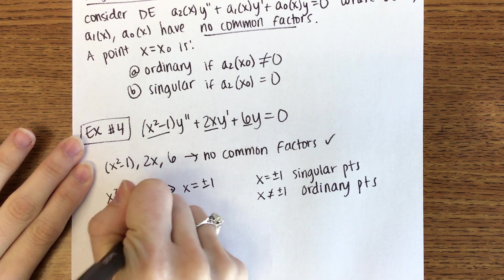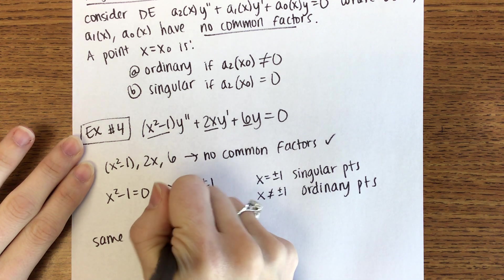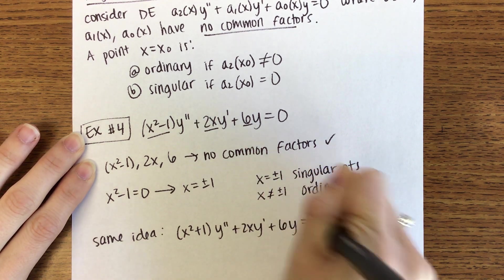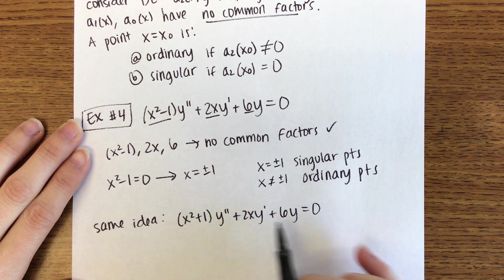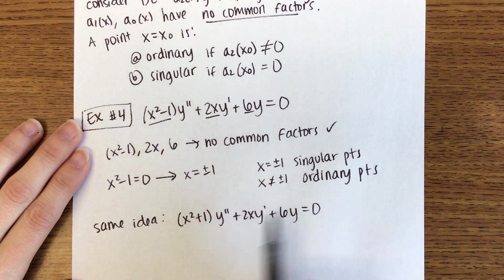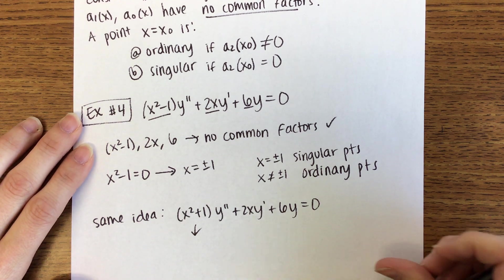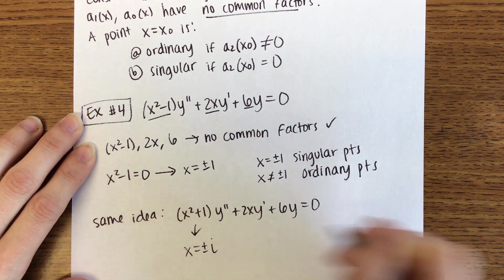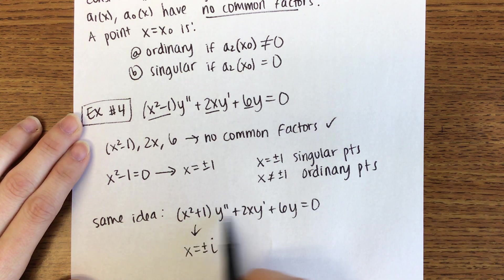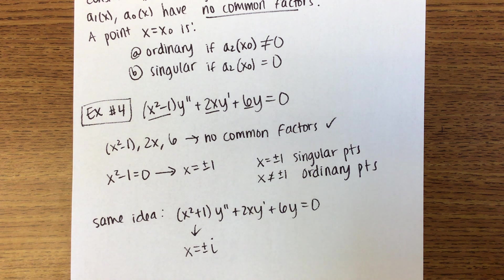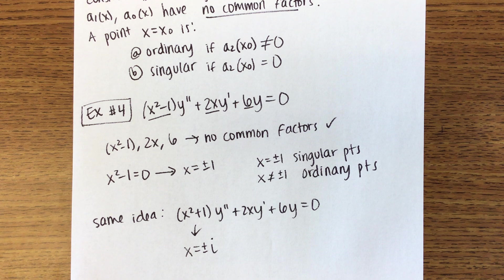The same idea applies if we change x²-1 to x²+1: (x²+1)y'' + 2xy' + 6y = 0. There are still no common factors. Setting x²+1 = 0 gives two imaginary singular points. So this differential equation still has two singular points — they just happen to be imaginary.